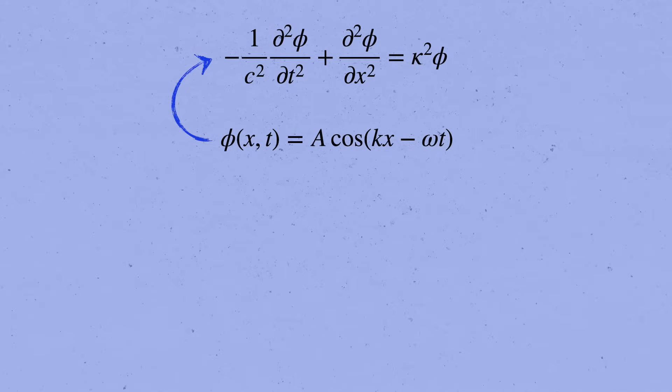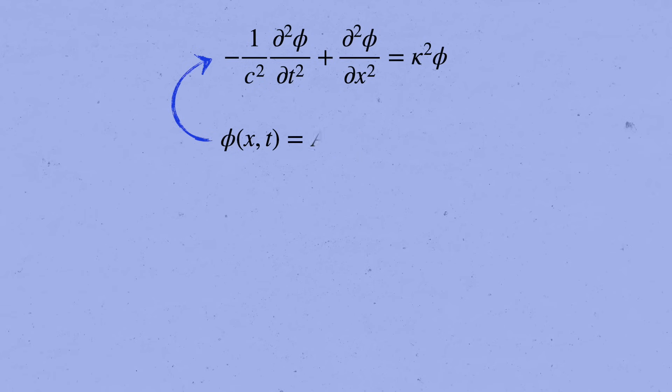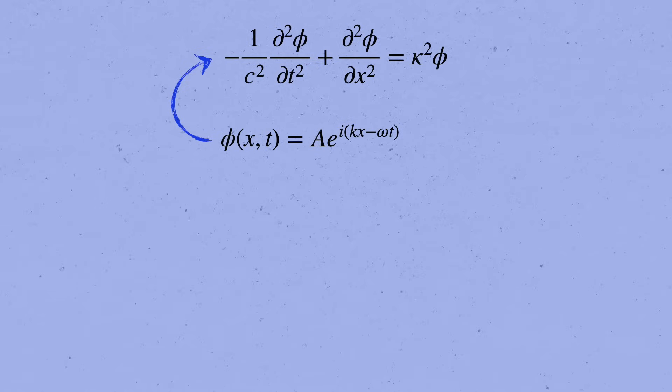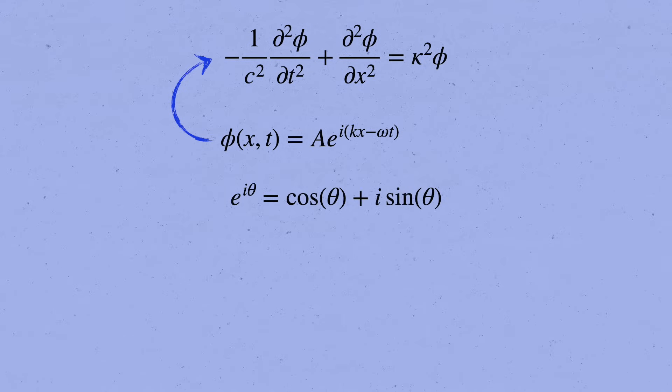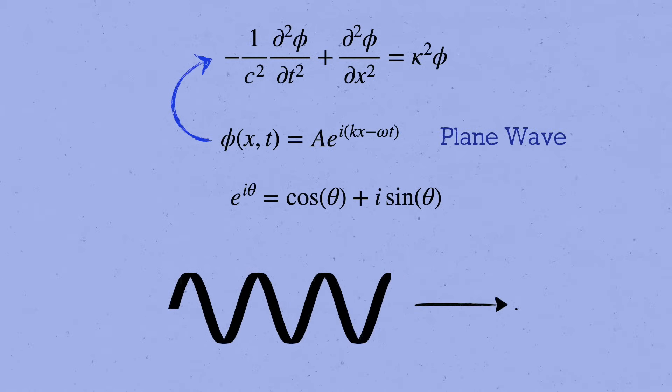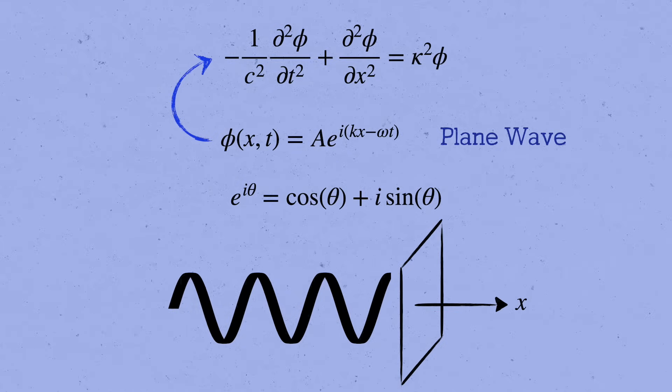Actually, it's a huge pain in the neck to deal with cosines and sines. It's much more convenient to work with complex exponentials, e to the i theta equals cosine theta plus i times sine theta. These solutions are called plane waves because the profile is constant in the yz plane that's perpendicular to the direction of motion along x. But again, this is just a guess.